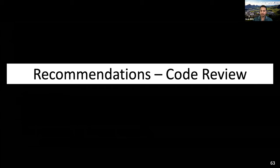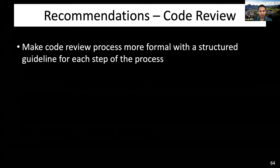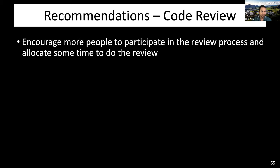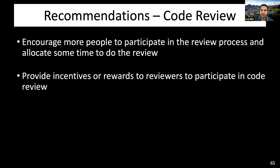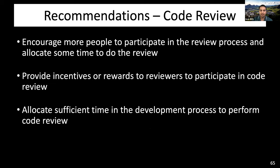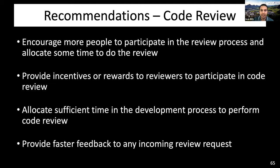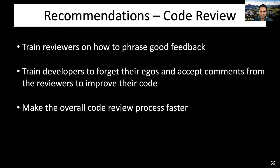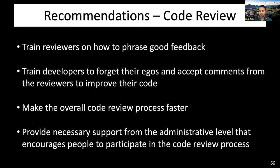Recommendations on peer code review: make the code review process more formal with structured guidelines for each step. Try to ensure at least one science review and one technical review. Include automatic tools in the code review process and train peer reviewers in best practices. Encourage more people to participate in the review process and allocate time for it. Provide incentives or rewards to reviewers. Allocate sufficient time in the development process for code review and provide faster feedback on incoming review requests. Train reviewers on how to phrase good feedback and train developers to accept comments from reviewers. Make the overall code review process faster and provide necessary support from the administrative level.